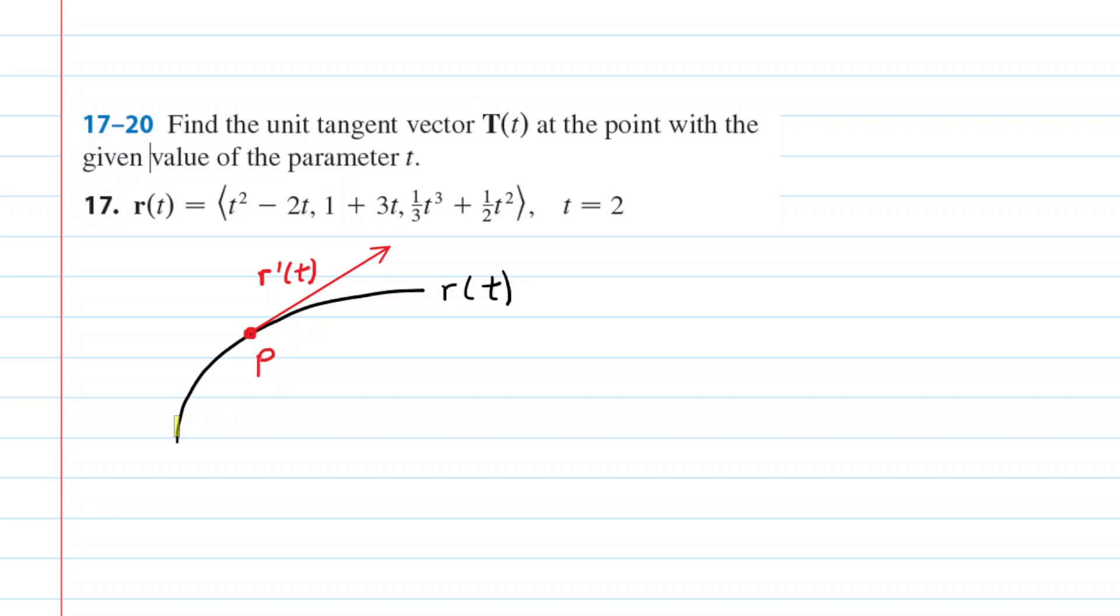So we have drawn a generic looking vector function r(t). That would be the black curve. We've selected an arbitrary point on that curve. We've called that point P.